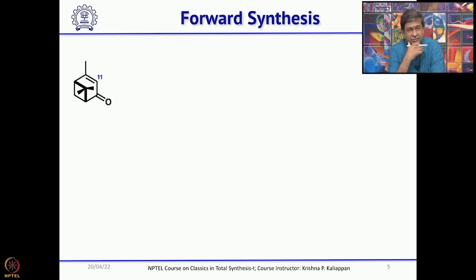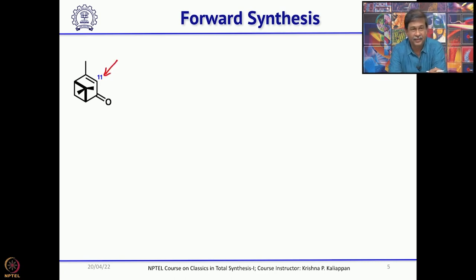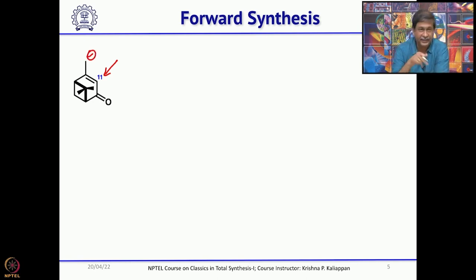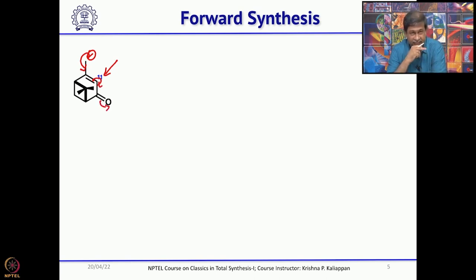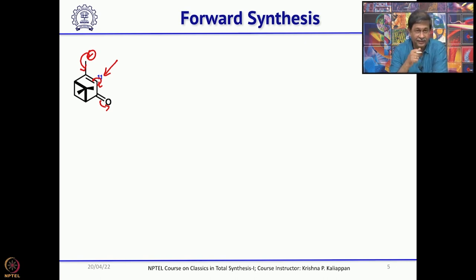He started with verbenone, which is commercially available and not very expensive. The first job is to alkylate. If you look at this enone, you can generate the anion only at the gamma position. When you generate the anion it will be in the form of a dienolate, all the way here. However, when you quench that with any electrophile, the electrophile will go to the alpha carbon, followed by migration of the beta-gamma double bond to the alpha-beta double bond.